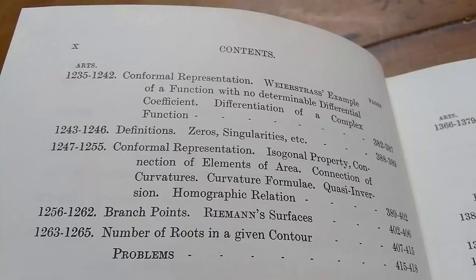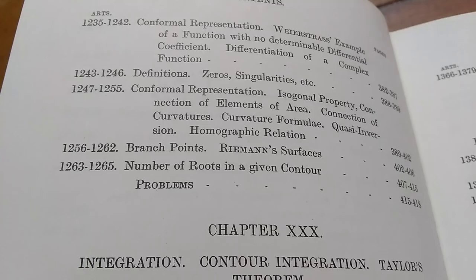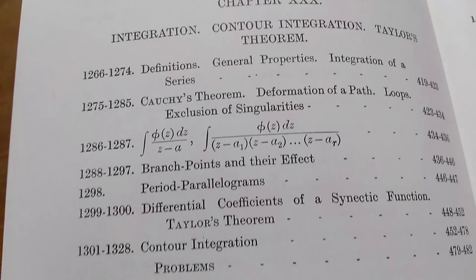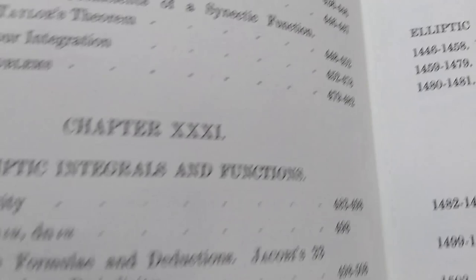Some pretty hardcore stuff here. This is 1922 calculus. Here's some more topics. Talks about contour integration. I mean, this is a calculus book. So extremely hardcore stuff. Elliptic integrals and functions. I guess it's trying to live up to its name as a treatise.